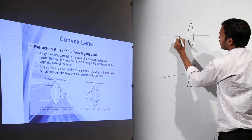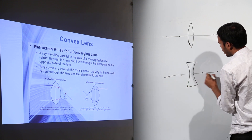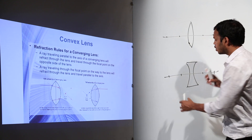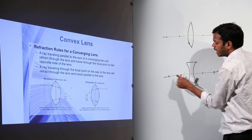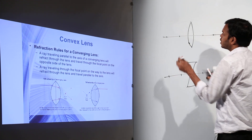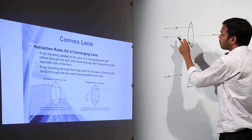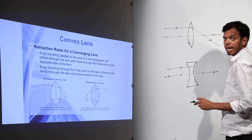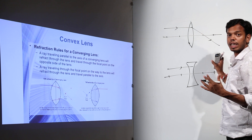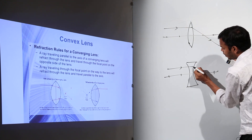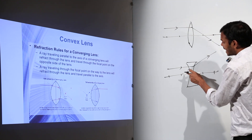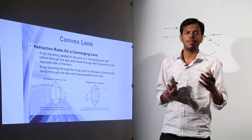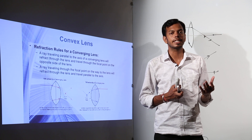The first rule is: a ray coming parallel to the principal axis will always pass through the focus. For the concave lens, the nature is diverging, so the ray coming parallel will diverge such that it appears to come from the focus on the same side. So rule one: the ray which is coming parallel to the principal axis will pass through focus — or appear to come from focus in the case of a concave lens.